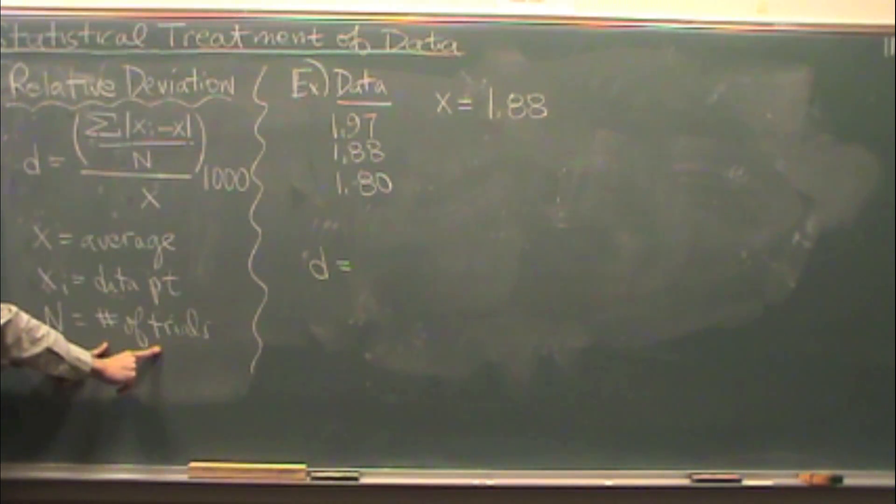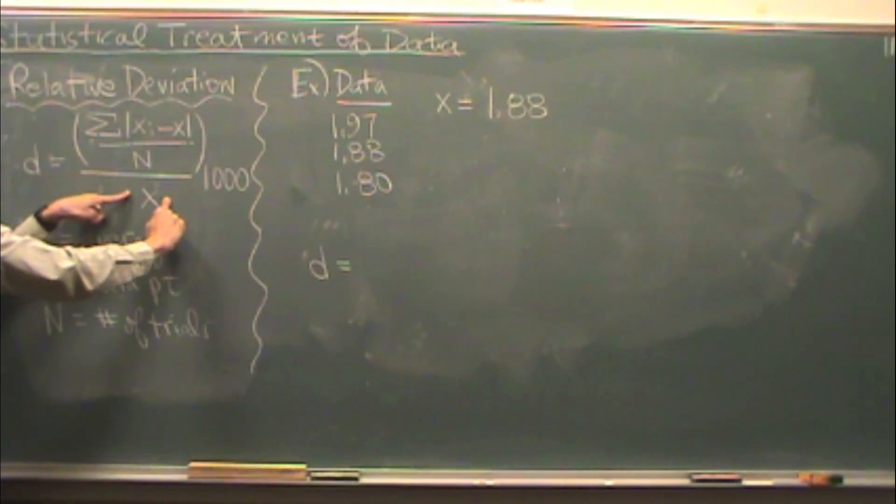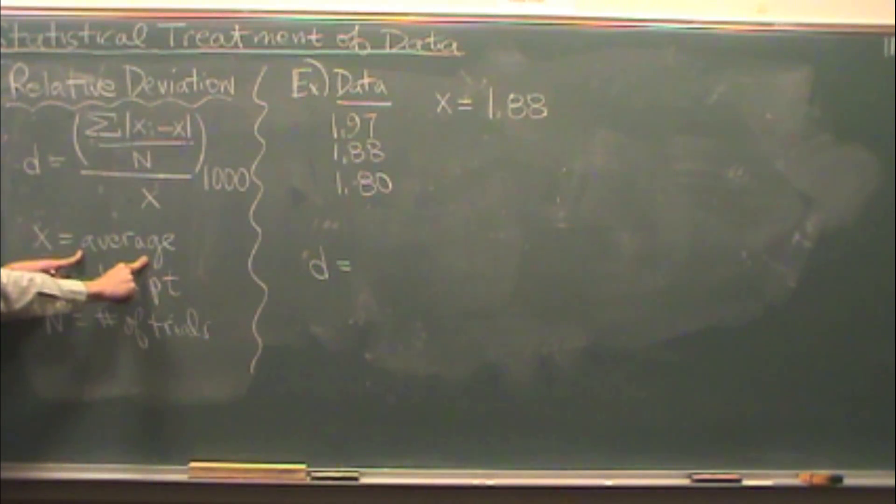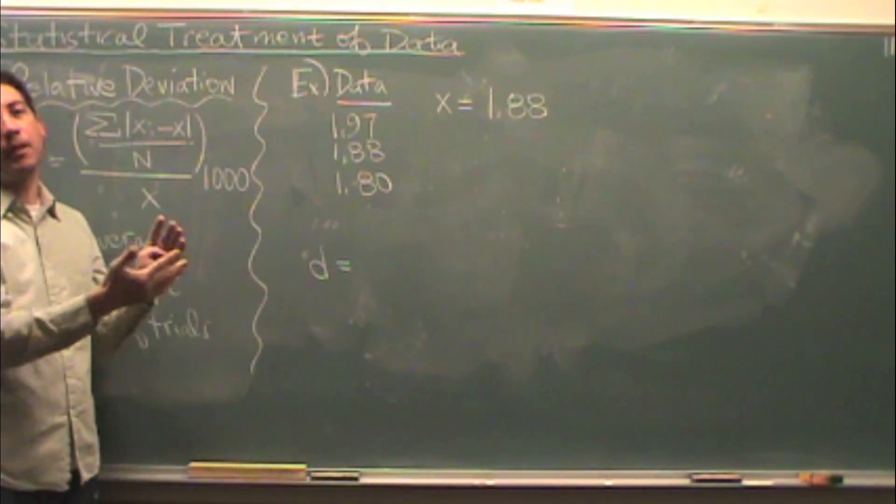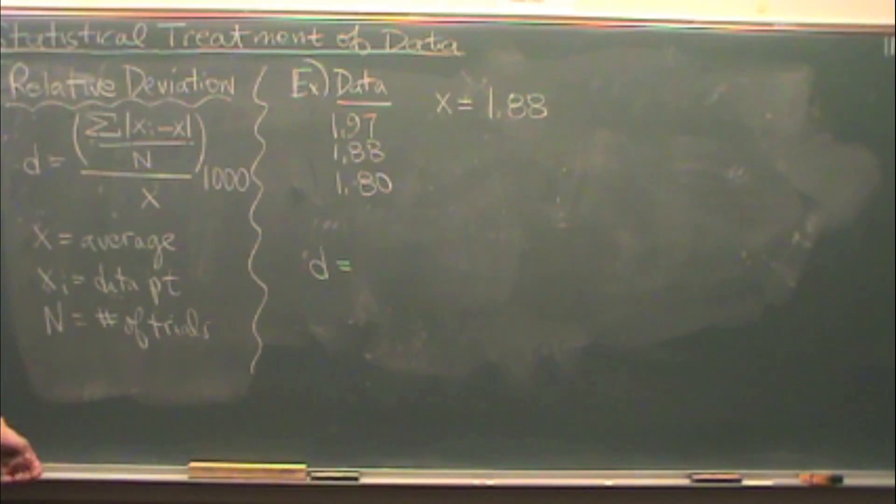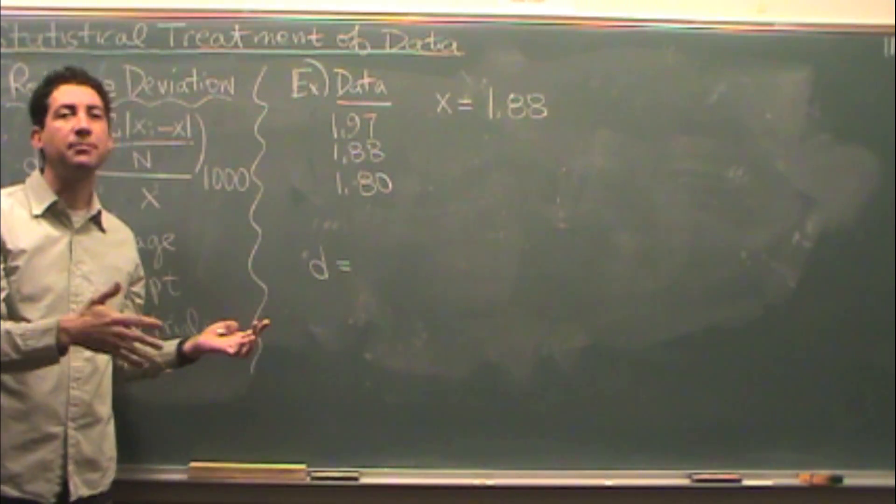Then we're divided by n, which is the number of trials. And then again, we divide that whole quantity by x, which is again the average. And we're going to multiply by a thousand. The reason that's typically done is these could be really small numbers. So you multiply by a thousand to make it a little bit bigger. And then that puts it in what's called parts per thousand, or PPT.